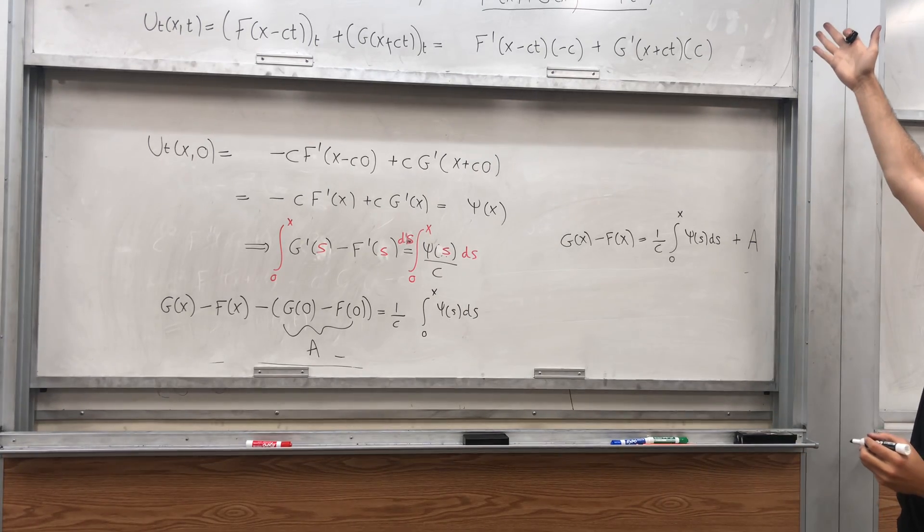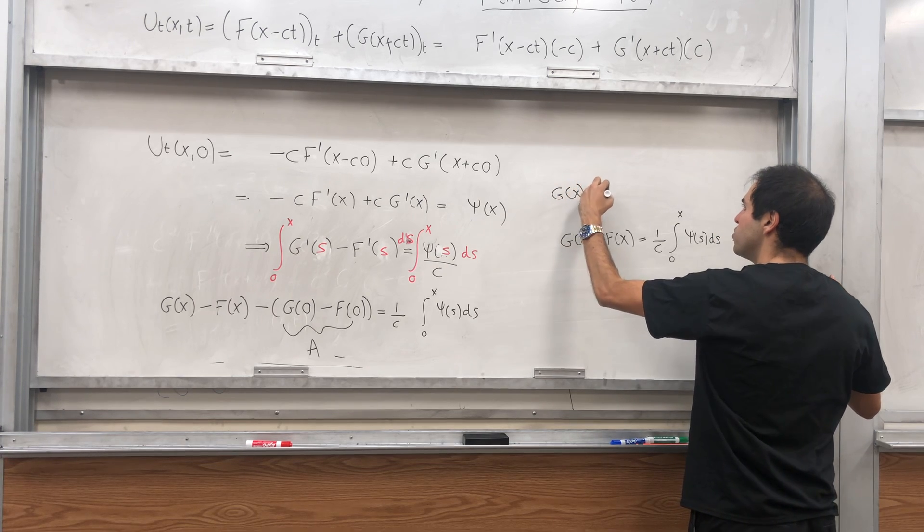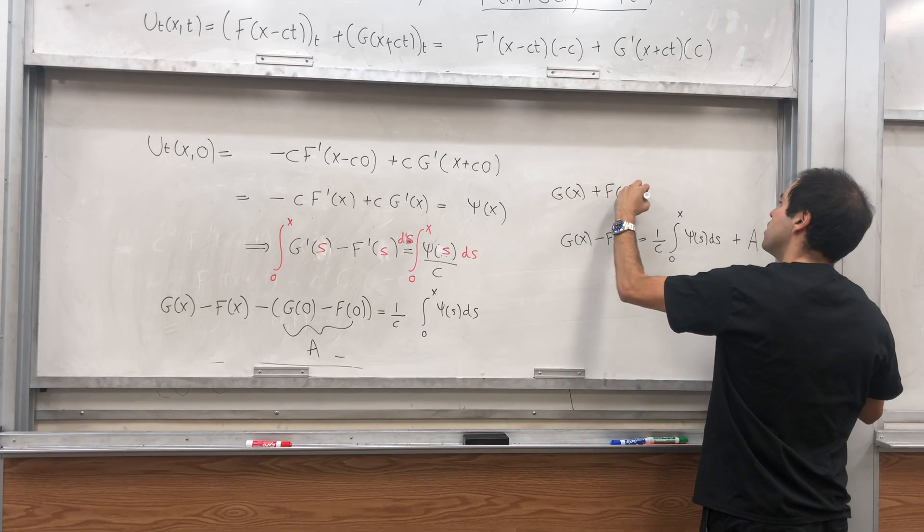So what we get is that G of x minus F of x equals one over C integral from zero to x psi of s ds plus A. On the other hand, we have the other equation that just says, in some sense, F plus G, so G plus F equals phi.